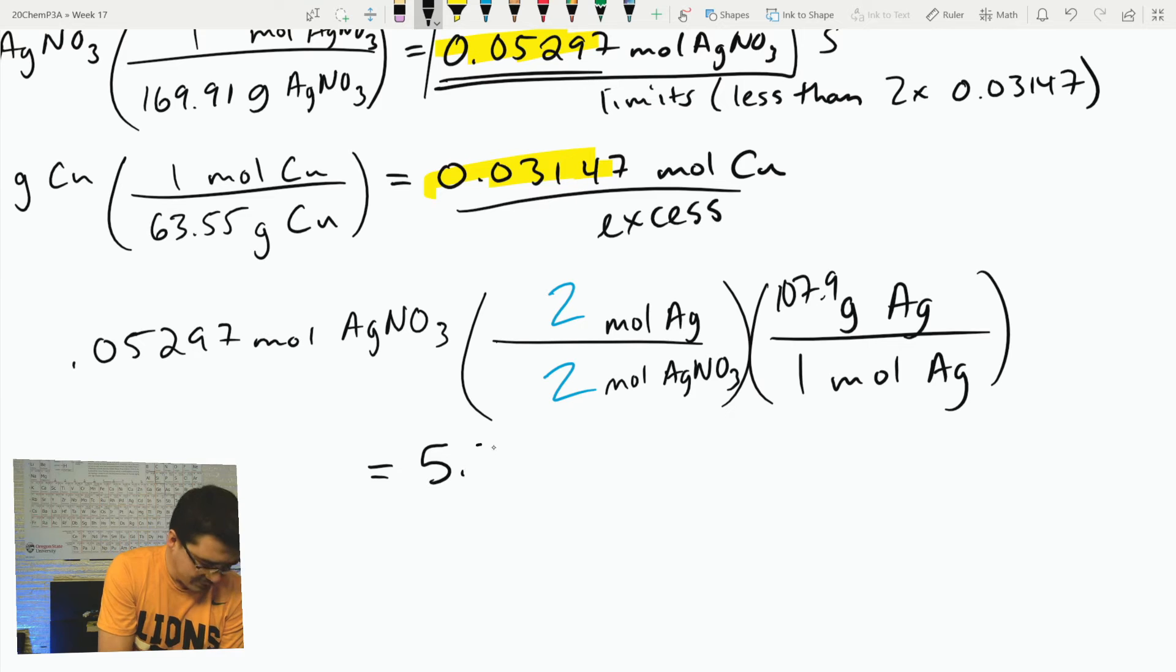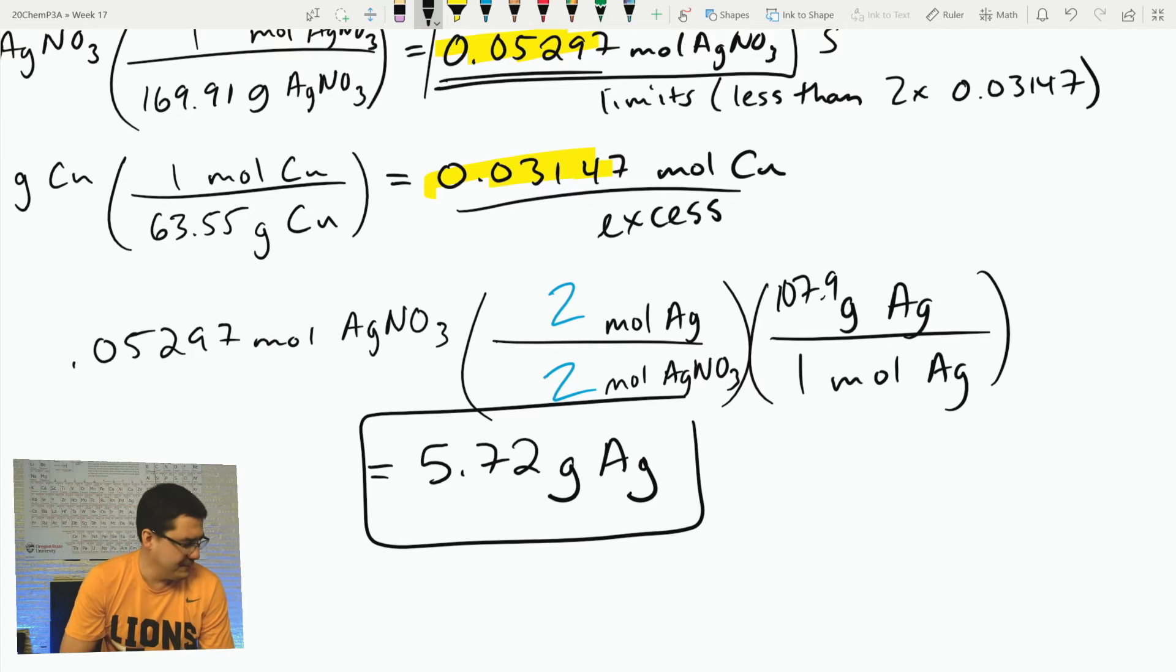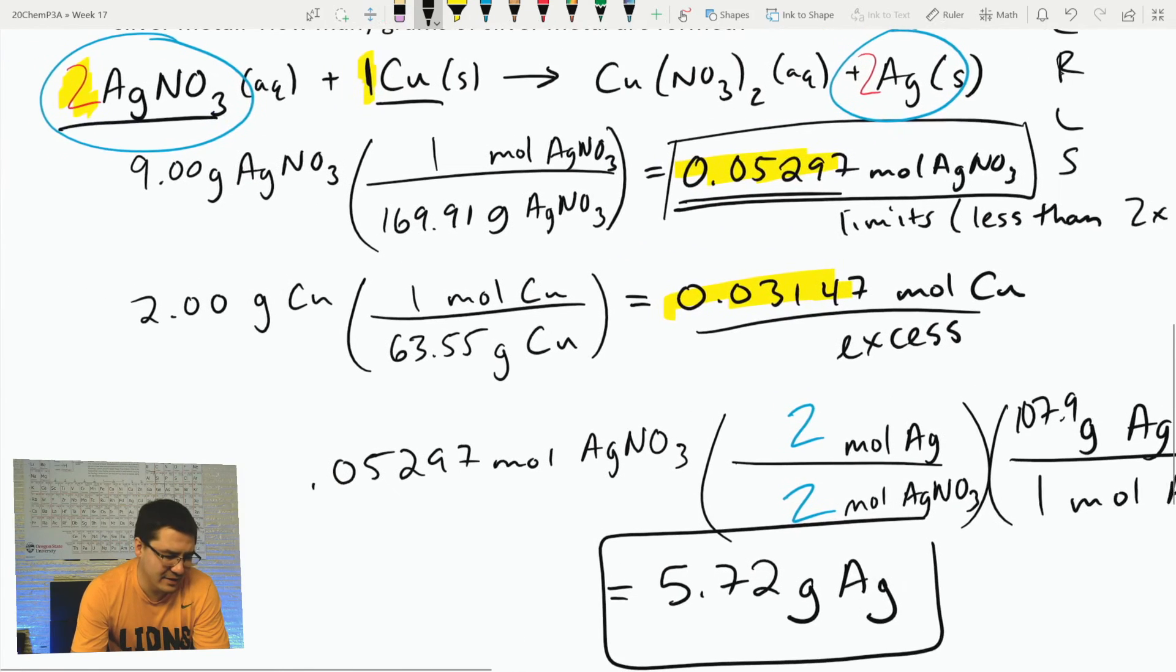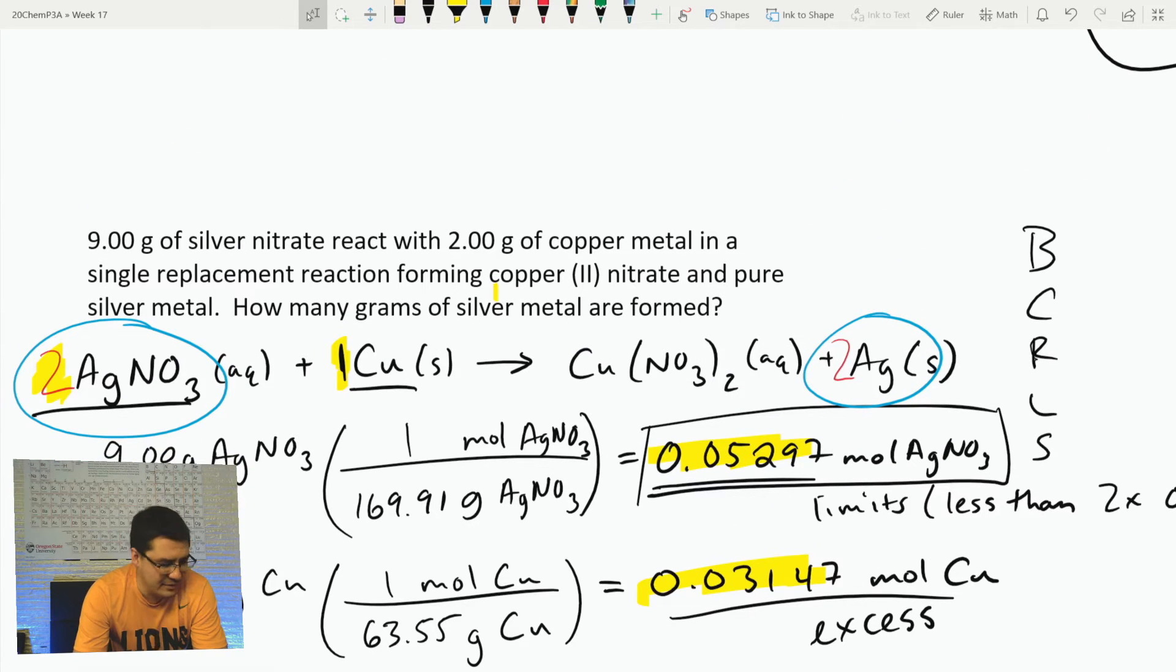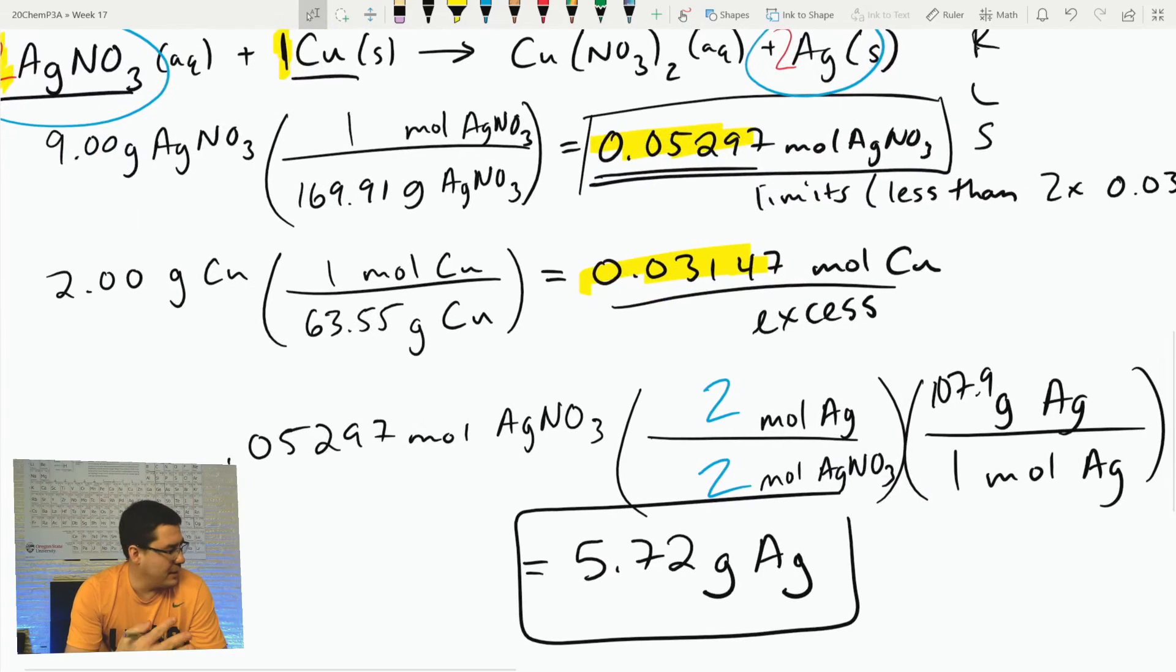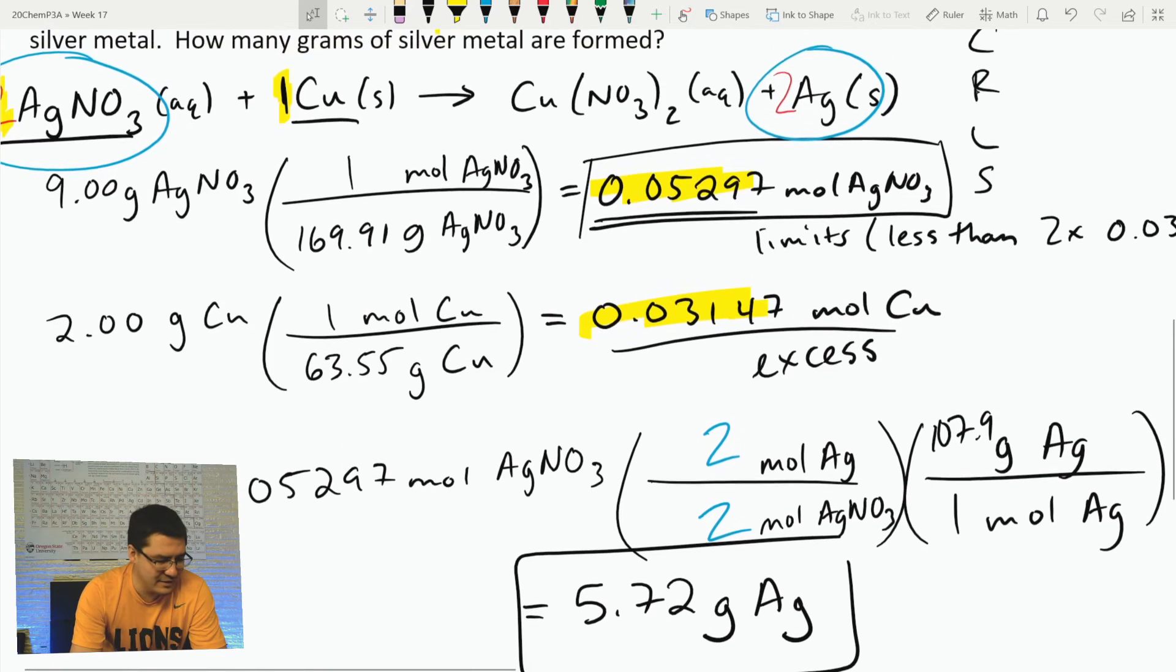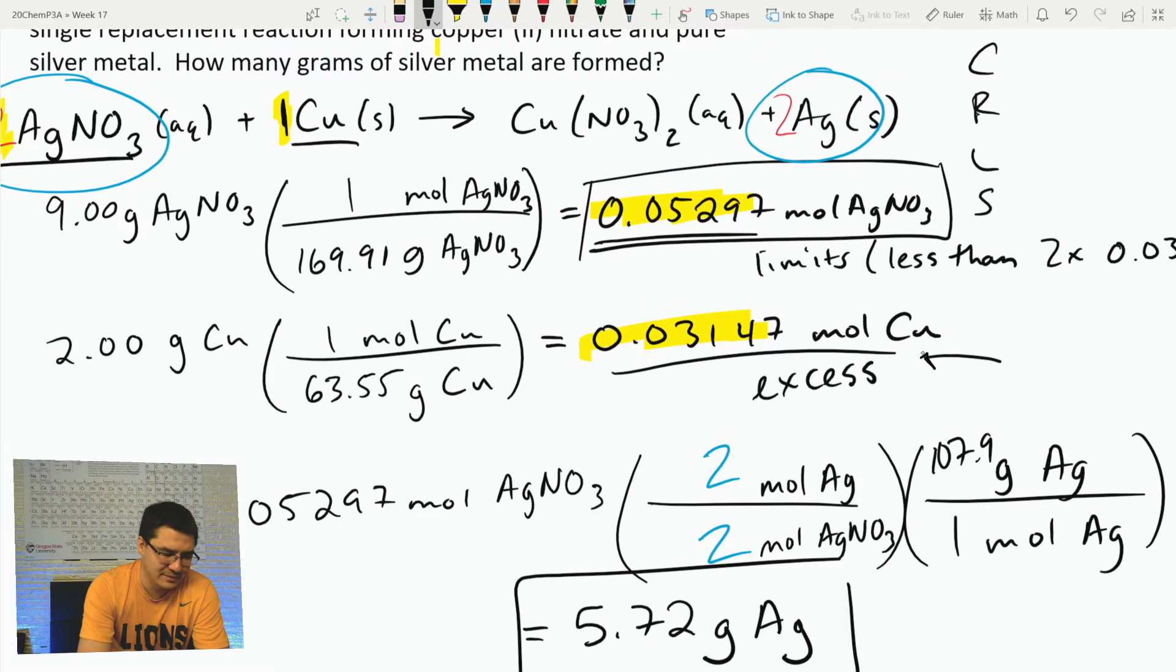So I get 5.72 grams of silver. You should do a reality check. I started with 9 grams of silver nitrate and 2 grams of copper metal, so 11 grams total. I ended up with about 5.7 grams of silver.